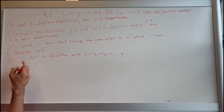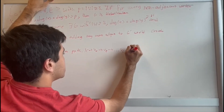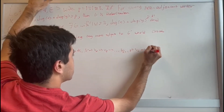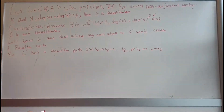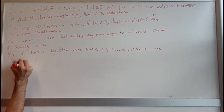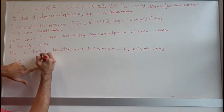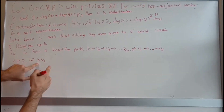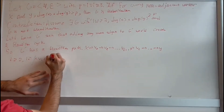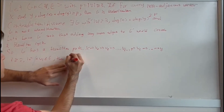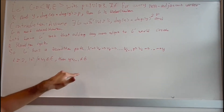Now we add a key claim. For i greater than or equal to 2: if x is adjacent to vertex vi — meaning the edge x-vi exists in g prime — then the edge y-v(i-1) cannot exist in the graph. In other words, y and v(i-1) cannot be adjacent to each other.